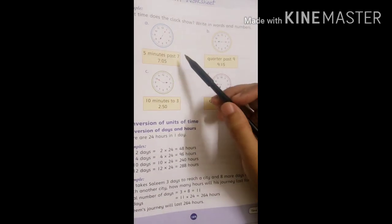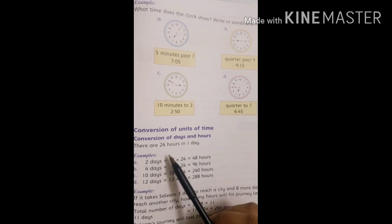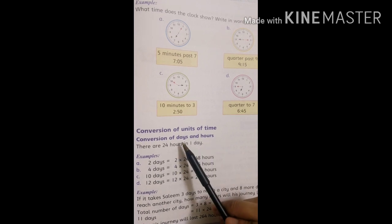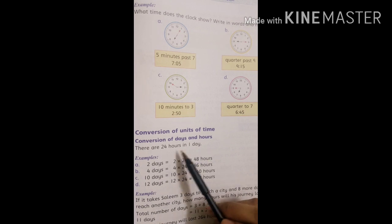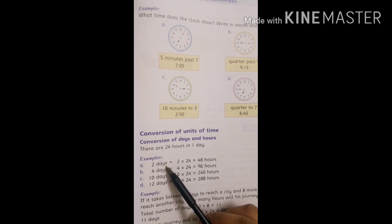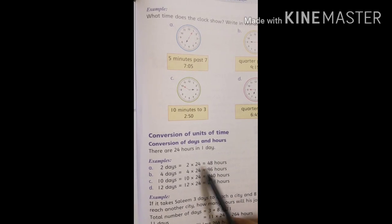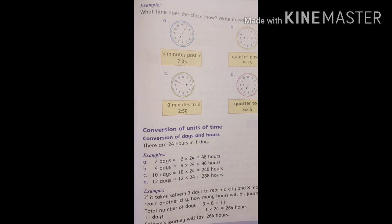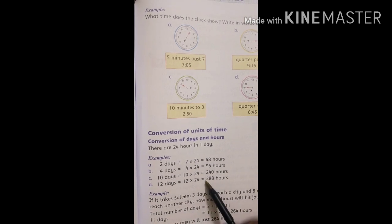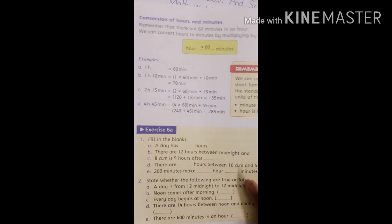Different clocks are given here with time mentioned in words and figures. Next topic: conversion of units of days and hours. Convert: one day equals 24 hours. Two days: 1 day times 24 hours equals 48 hours. Multiply: 4 days equals 96 hours. 10 days equals 240 hours.